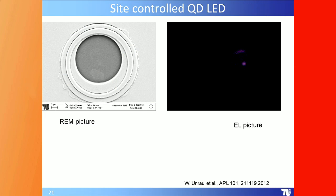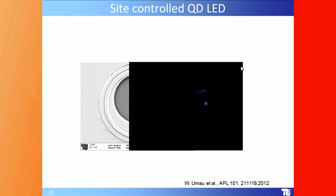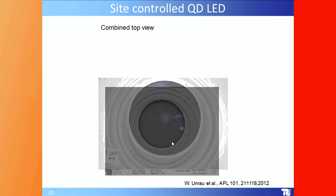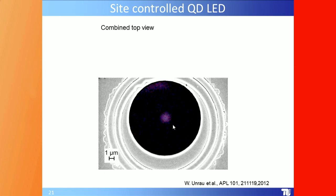Here is a picture of the diode structure in real life. You can see the pink emission spot at the center — that is the emission of a single photon from a single photon emitter, using the site-control approach shown in the previous slide.